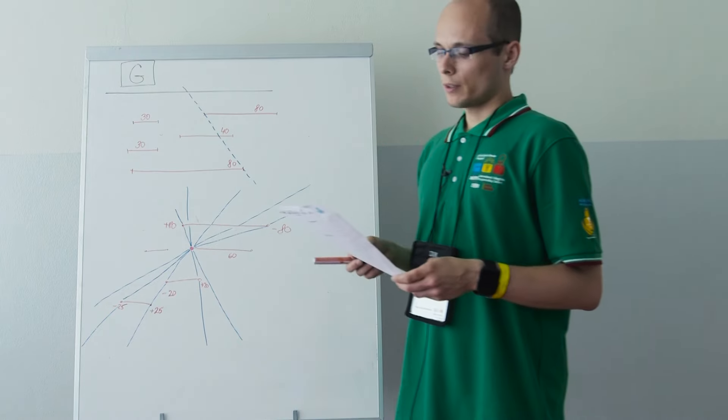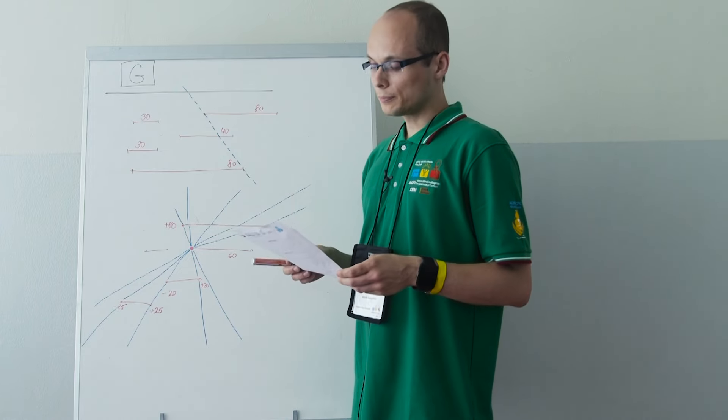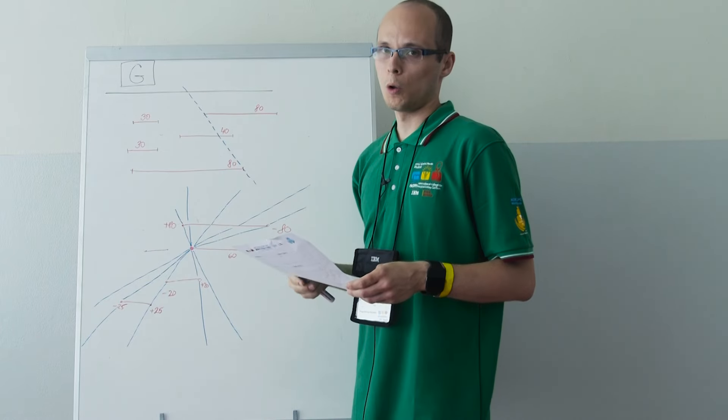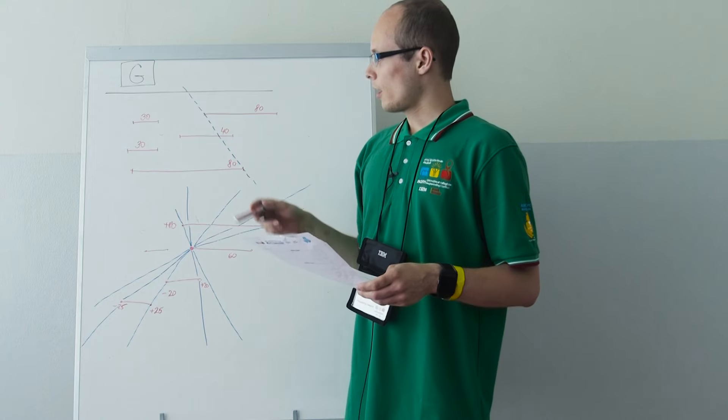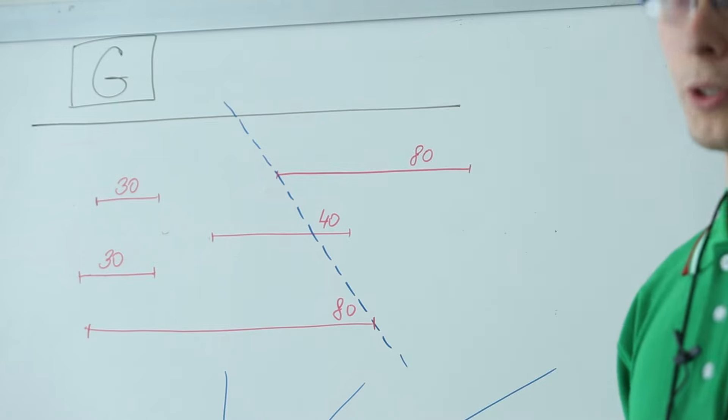This gives a trivial algorithm in N cubed. We just try all possible pairs of endpoints and we find deposits that will be traversed by drilling through these endpoints.